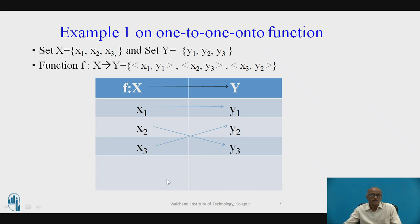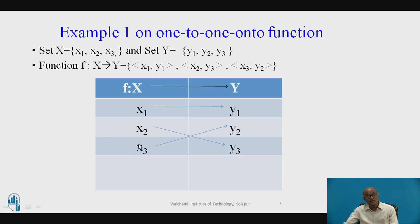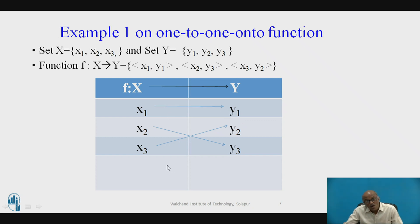First, let us check whether it is a valid function. The first condition is that the domain of the function should equal set X — all elements of set X must be involved in the mapping. Yes, x1, x2, and x3 are all involved. The second condition is uniqueness: every x should map to only one unique value of y, with no element of X mapped to more than one element of Y. Both conditions are satisfied, so it is a valid function.